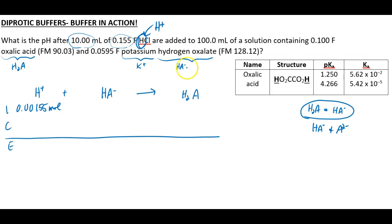And then how many moles of HA minus? Well, again, we know the concentration. We know the volume. I think that works out to be 0.00595 moles. And then how many moles of H2A do we have initially? Again, we know the volume and we know the concentration. I think that's 0.0100 moles of H2A initially.